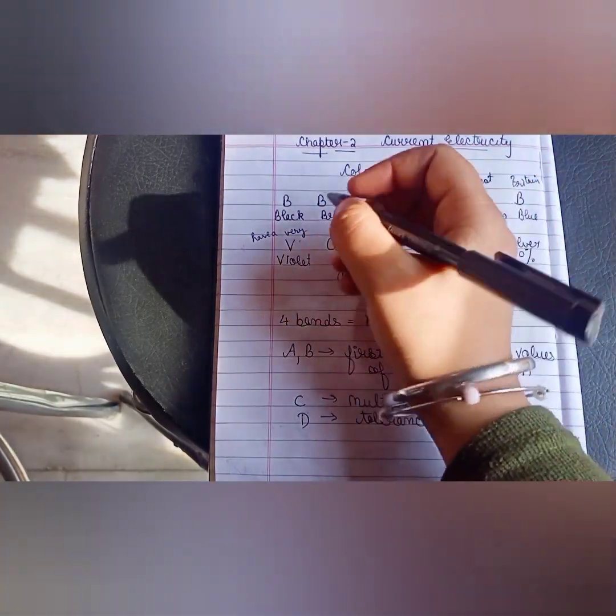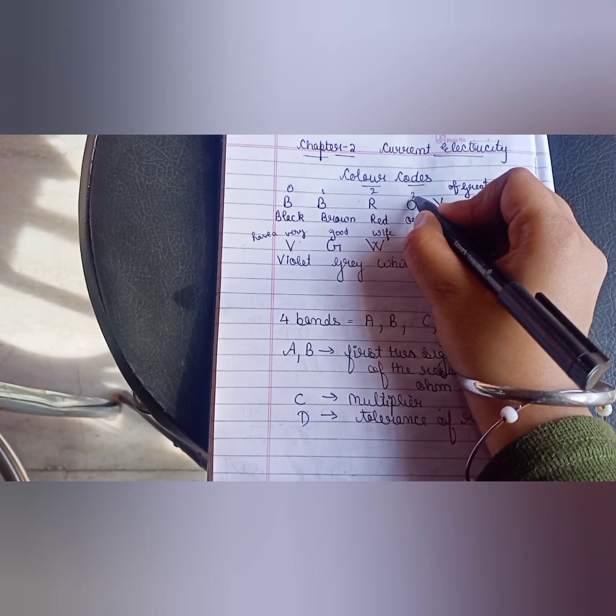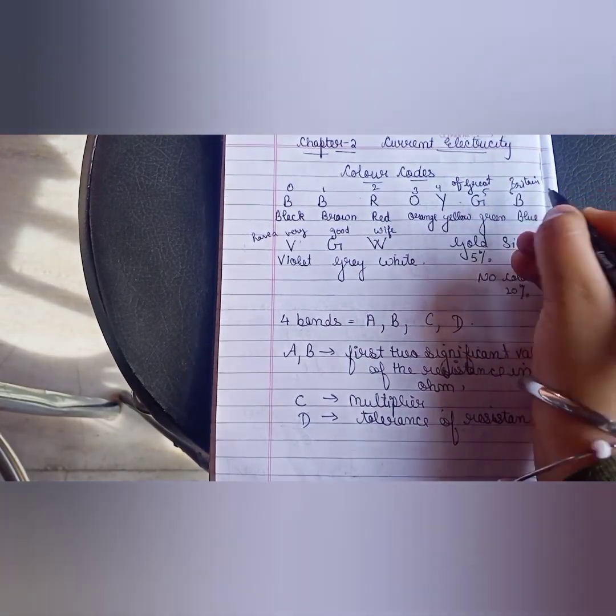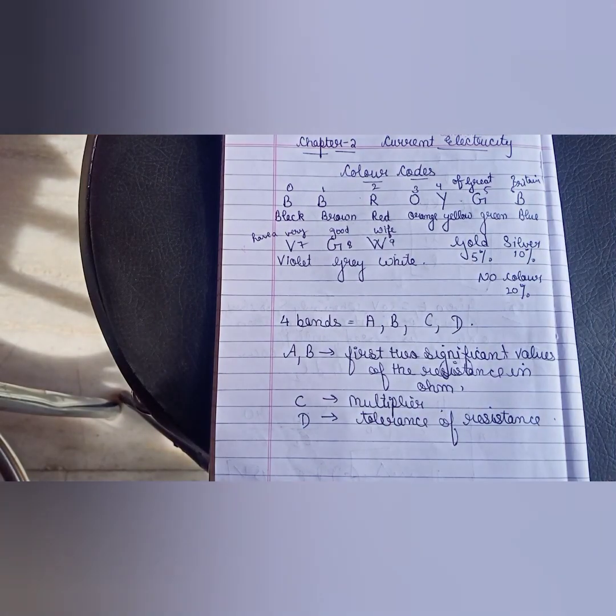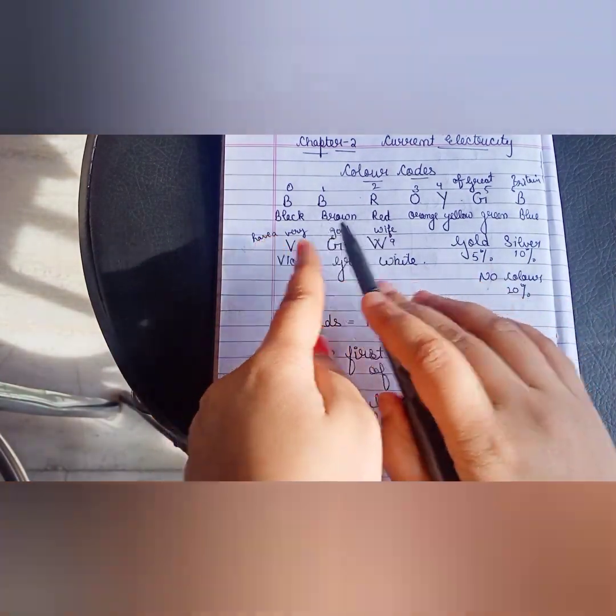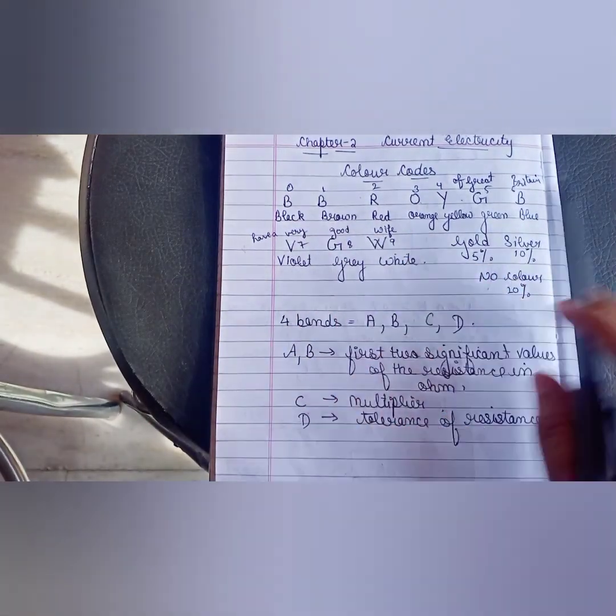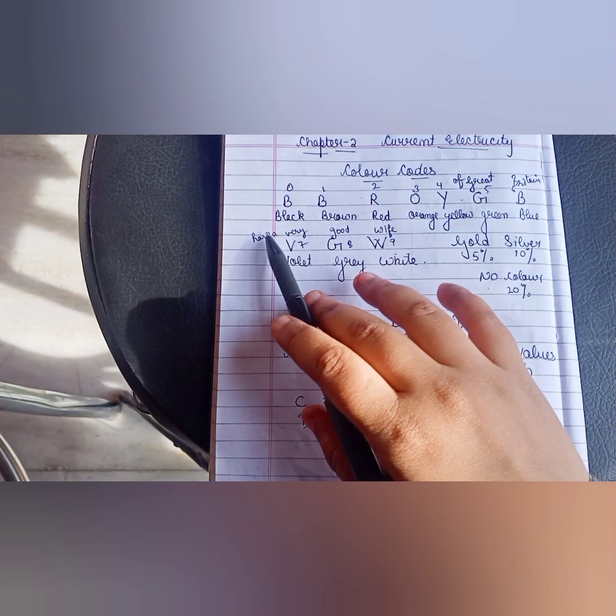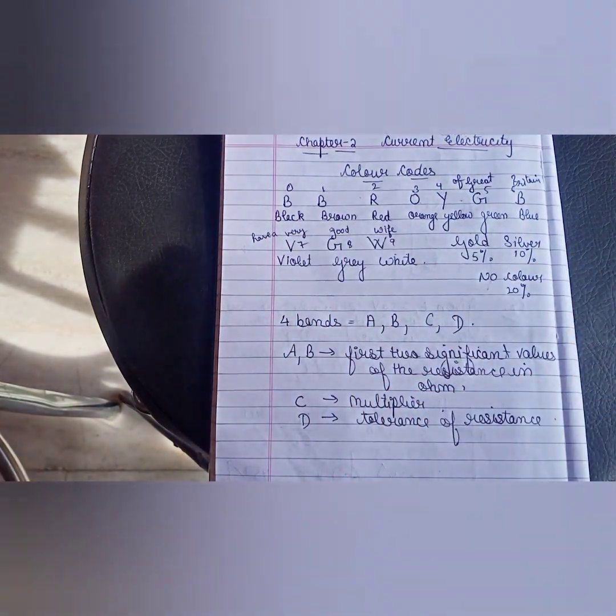But what will this number be? You will start from B to 0, 1, 2, 3, 4, 5, 6. Then you will write it line-wise. 7, 8, 9. So you have the colors. So we will understand this. B.B. Roy of Great Britain have a very good wife. 0, 1, 2, 3, 4, 5, 6, 7, 8, 9 colors. And the colors are in your face.